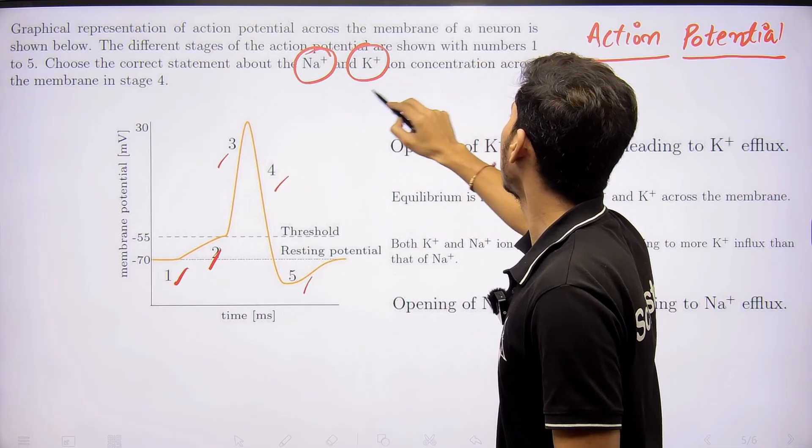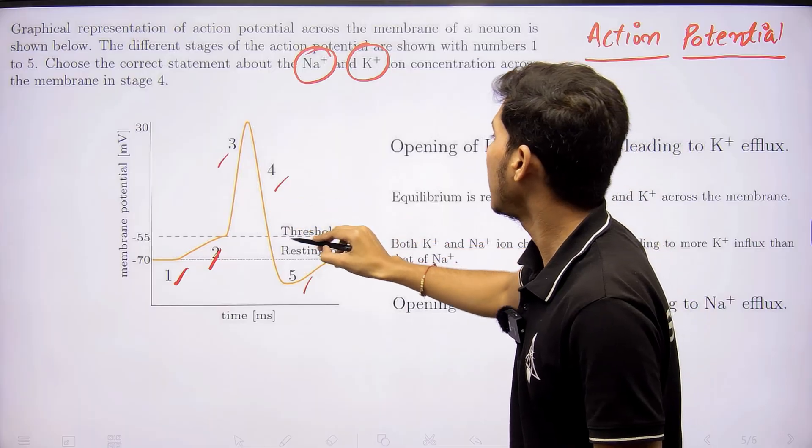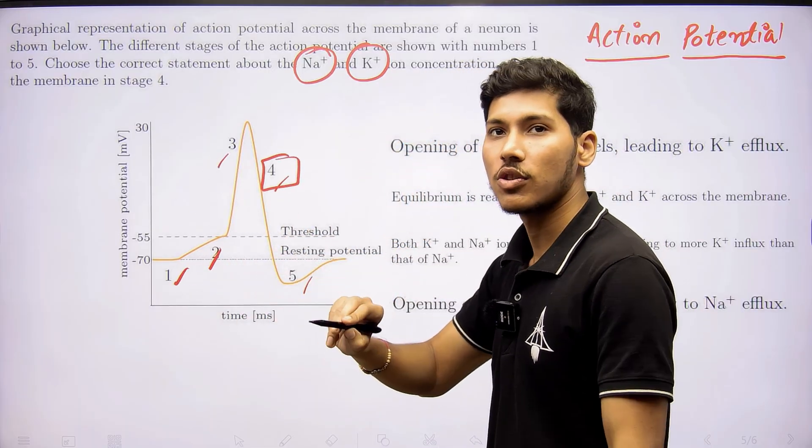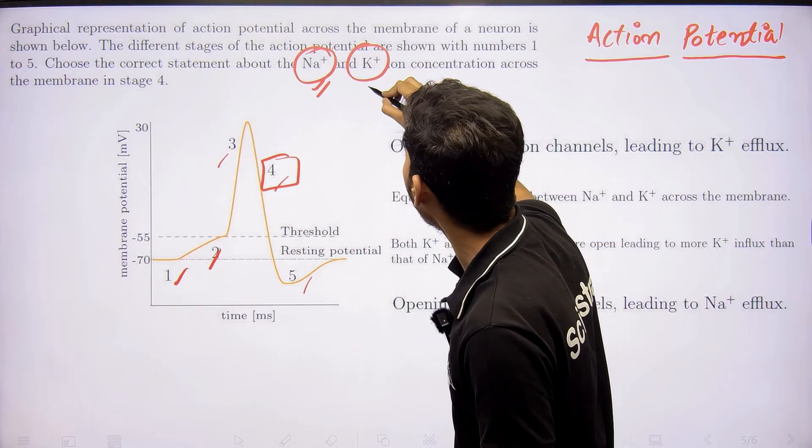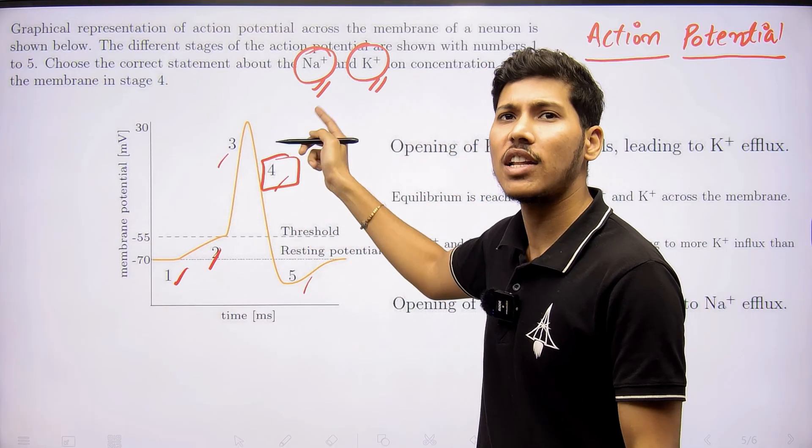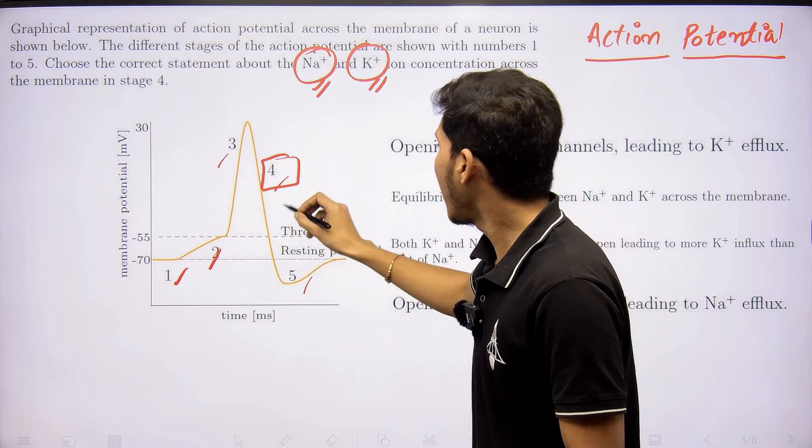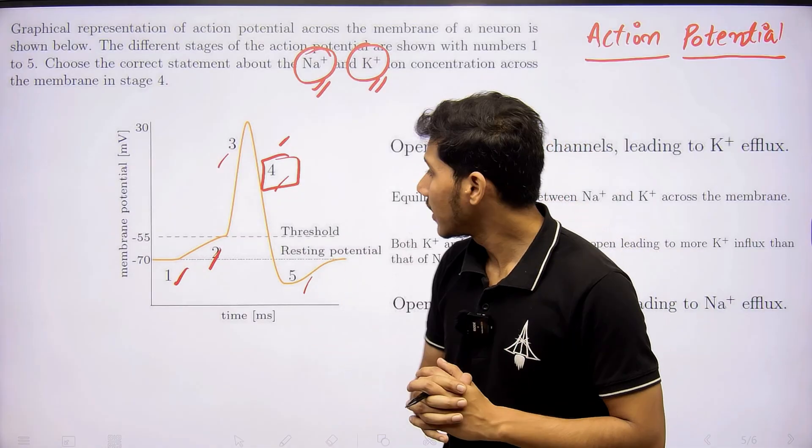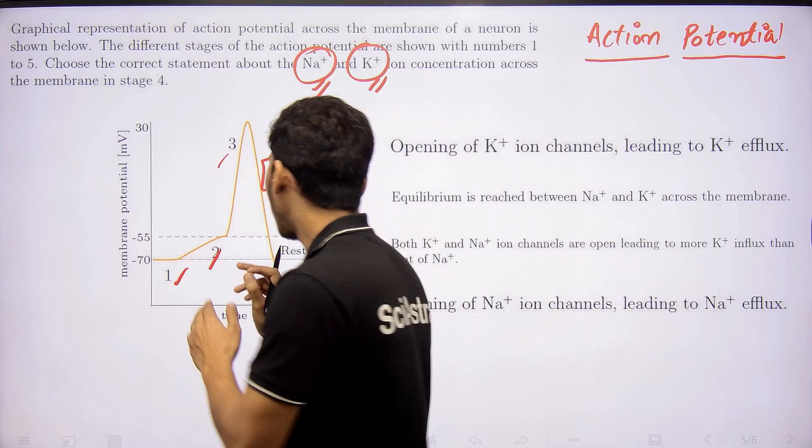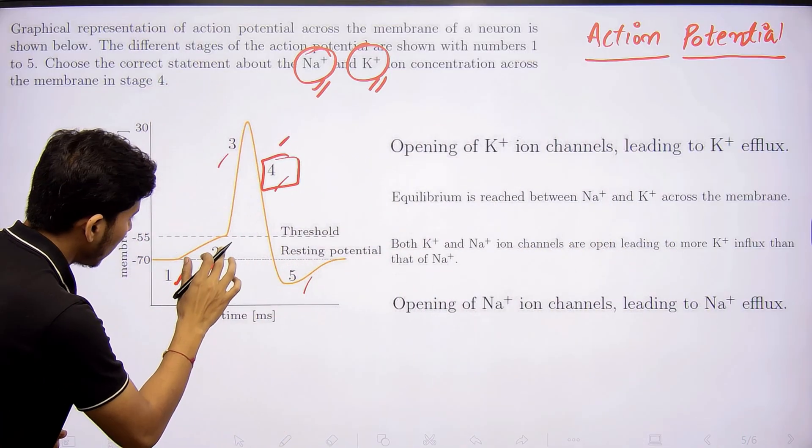So they are specifically asking what is happening to the sodium and potassium channels and the flow of sodium and potassium at step number 4. Let's see this graph. They have given 1, 2, 3, 4, and 5. Now let me tell you about all these steps.